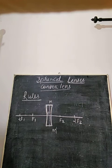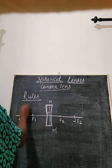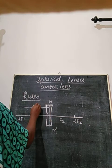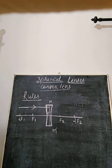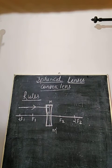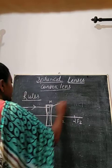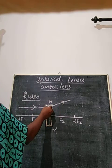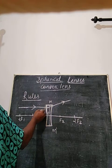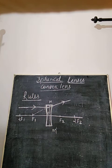What will happen to a ray which is parallel to the principal axis? This incident ray parallel to the principal axis strikes the lens at a particular point. After refraction, this ray appears to diverge from the principal focus located on the same side of the lens — appearing to come from point f1 of the concave lens.